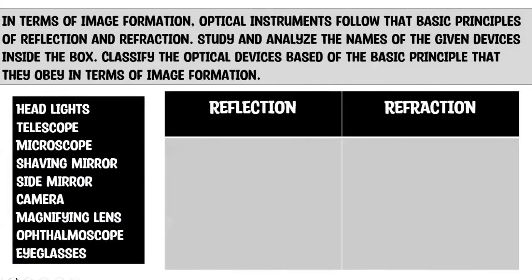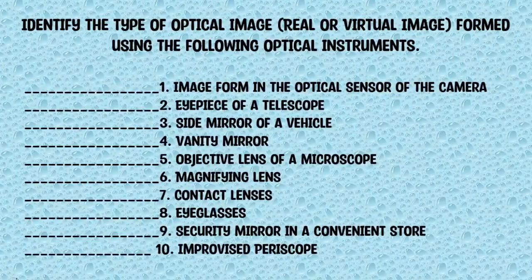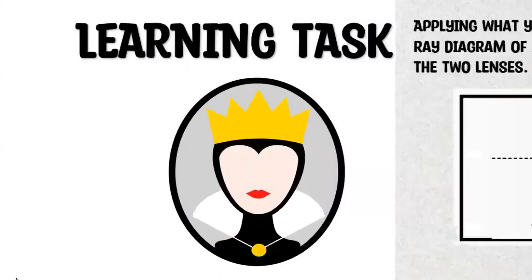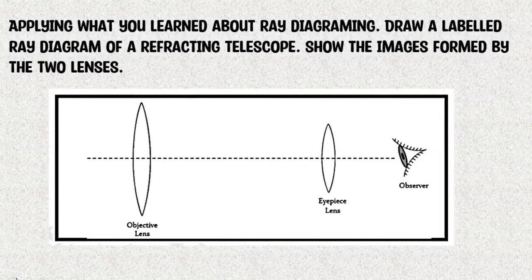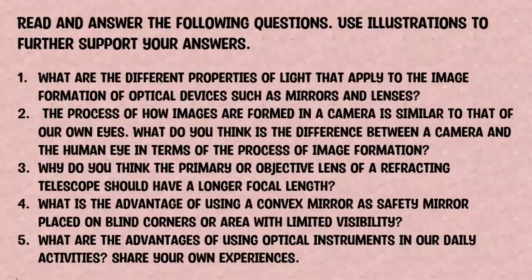For Learning Task 1, in terms of image formation, optical instruments follow the basic principles of reflection and refraction. Study and analyze the names of the given devices inside the box and classify the optical devices based on the principle they obey in terms of image formation. For Learning Task 2, identify the type of optical image — either real or virtual — formed using the following optical instruments. For Learning Task 3, applying what you learned about diagramming, draw and label a diagram of a refracting telescope and show the image formed by the two lenses. For Learning Task 4, read and answer the following questions, using illustrations to further support your answers.